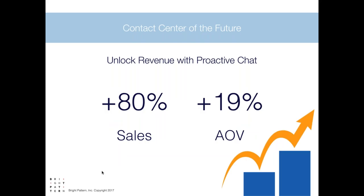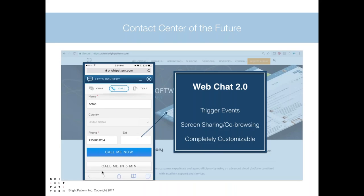One that I'm particularly excited about is our new web chat with proactive chat. There has been a lot of research over the last year on how proactive chat in a contact center improves sales — that number is a sales increase of over 80% as well as an average order value increase of 19%. In this release we launched our web chat 2.0, which, like the wallboards, is completely customizable and allows your agents to engage in proactive chat through different trigger events. It also includes screen sharing and co-browsing.